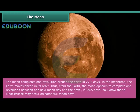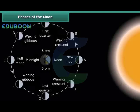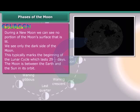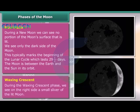You know that a lunar eclipse may occur on some full Moon days. Phases of the Moon. New Moon: During a new Moon, we can see no portion of the Moon's surface that is lit. We see only the dark side of the Moon. This typically marks the beginning of the lunar cycle, which lasts 29.5 days. The Moon is between the Earth and the Sun in its orbit. Waxing Crescent: During the waxing crescent phase, we see on the right side a small sliver of the lit Moon.